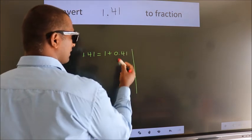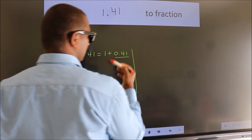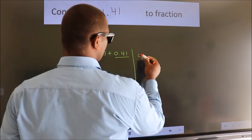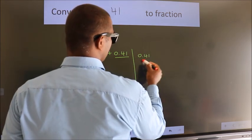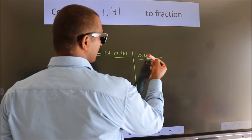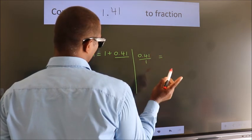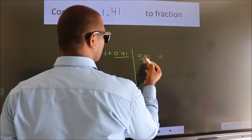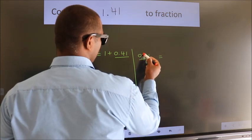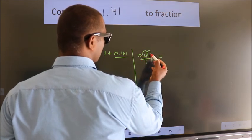Next, convert this to a fraction. So 0.41. To convert this to a fraction, we have to move the decimal after 2 numbers.